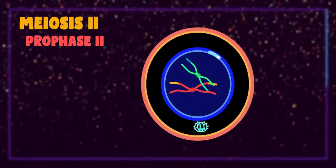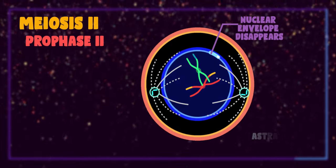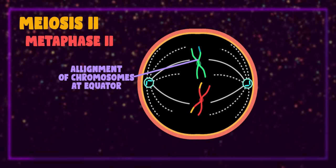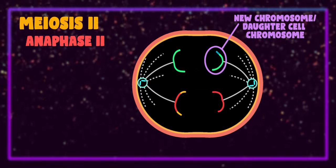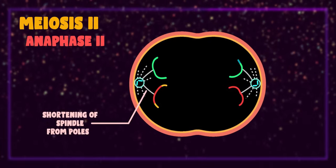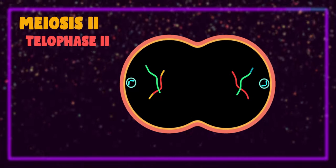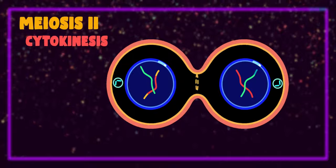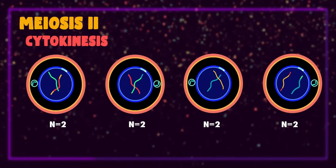Now meiosis 2 is exactly similar to that of mitosis, and the events of prophase 2, metaphase 2, anaphase 2, and telophase 2 are also similar to that of mitotic prophase, metaphase, anaphase, and telophase respectively. So after completion of cytokinesis we get 4 haploid cells, each having one chromatid of each chromosome. These haploid cells may either be gametes or spores or entire organism depending on the type of meiosis.